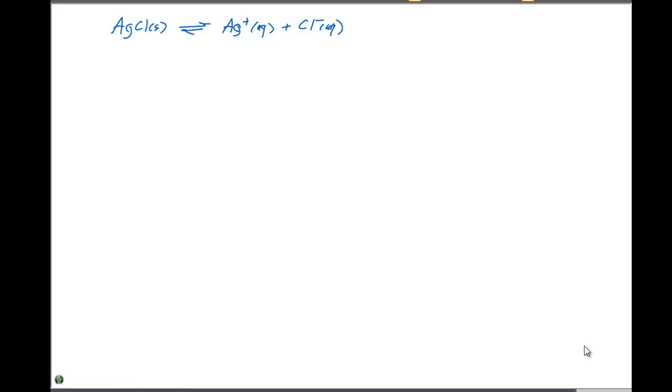And we know that the Q is equal to any concentration of silver plus times Cl minus. We also know that the Ksp is equal to the concentration of Ag plus at equilibrium, times the concentration of Cl minus at equilibrium. These are specific concentrations. And we know that our Ksp, if we look at the table for this, is going to be 1.8 times 10 to the minus 10.